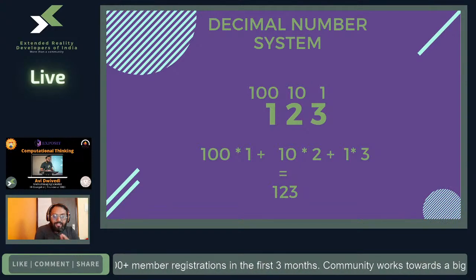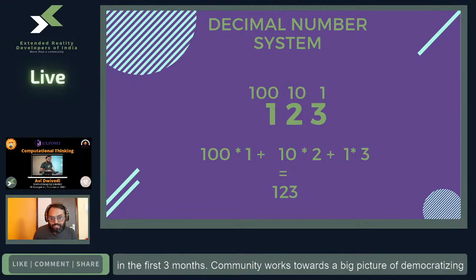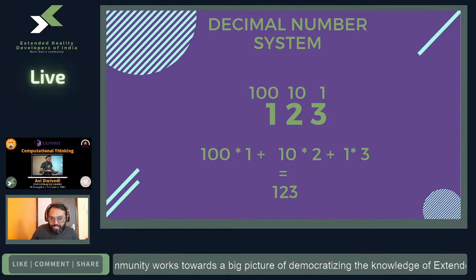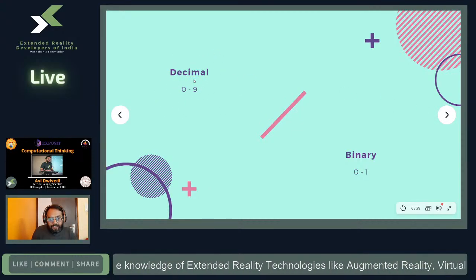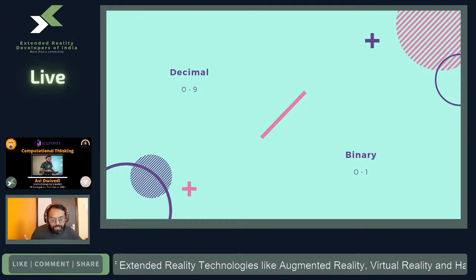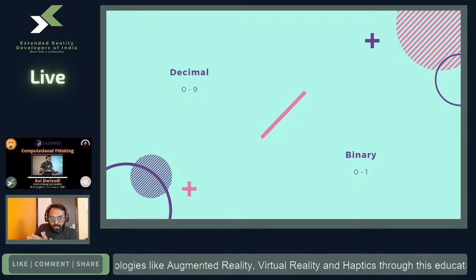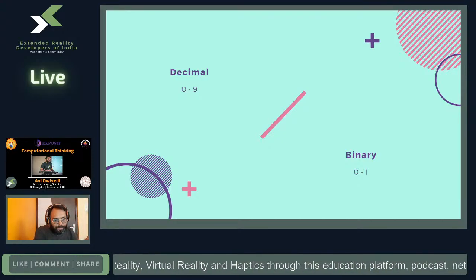There are other number systems with different bases, like hexadecimal, but the most important one when talking about machines is binary. Base 10 means we have 10 characters: 0 through 9. Binary has just two characters — 0 and 1 — making it a base-2 number system.